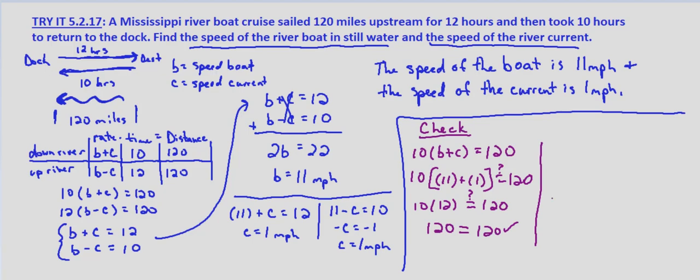Using our other equation, we have 12 times B minus C equals 120. So we want to know, does 12 times 11 minus 1 equal 120? So does 12 times 10 equal 120, and it does check. 120 equals 120.